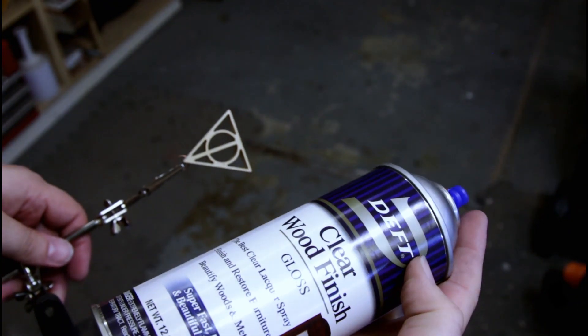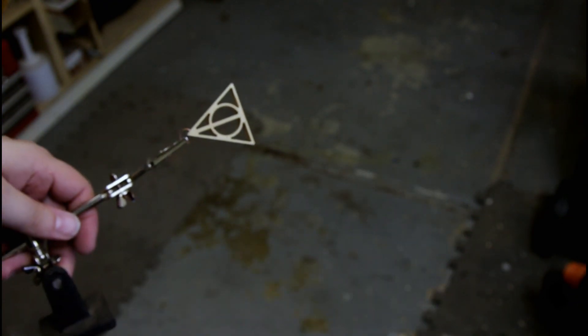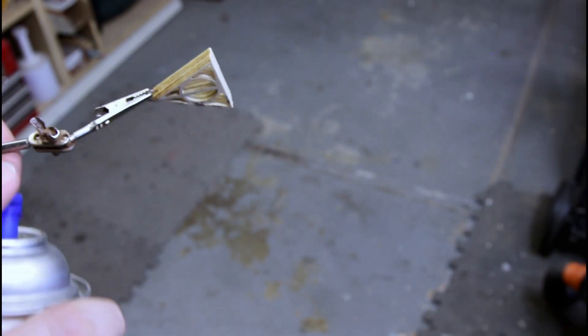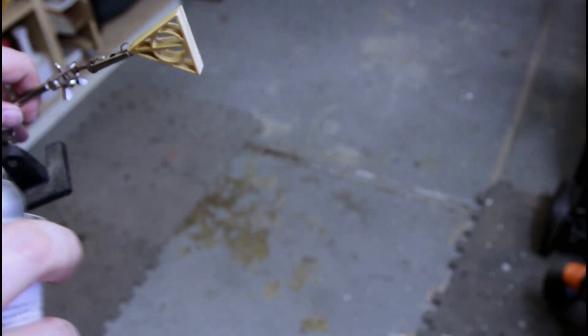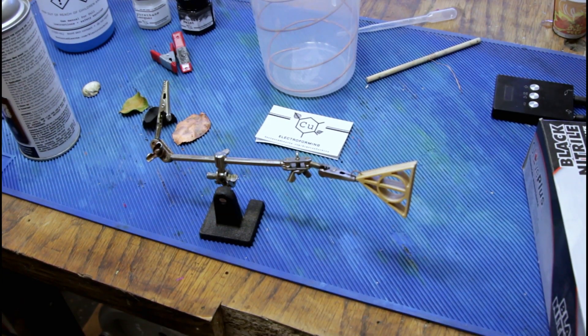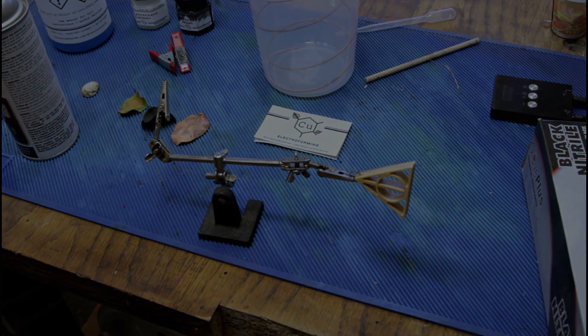I like spray lacquer because it dries fast, and I can put in two coats in about 30 minutes. So we'll let that dry for about 20 minutes, and then we'll put on a second coat. Once the lacquer dries, we move on to conductive paint.